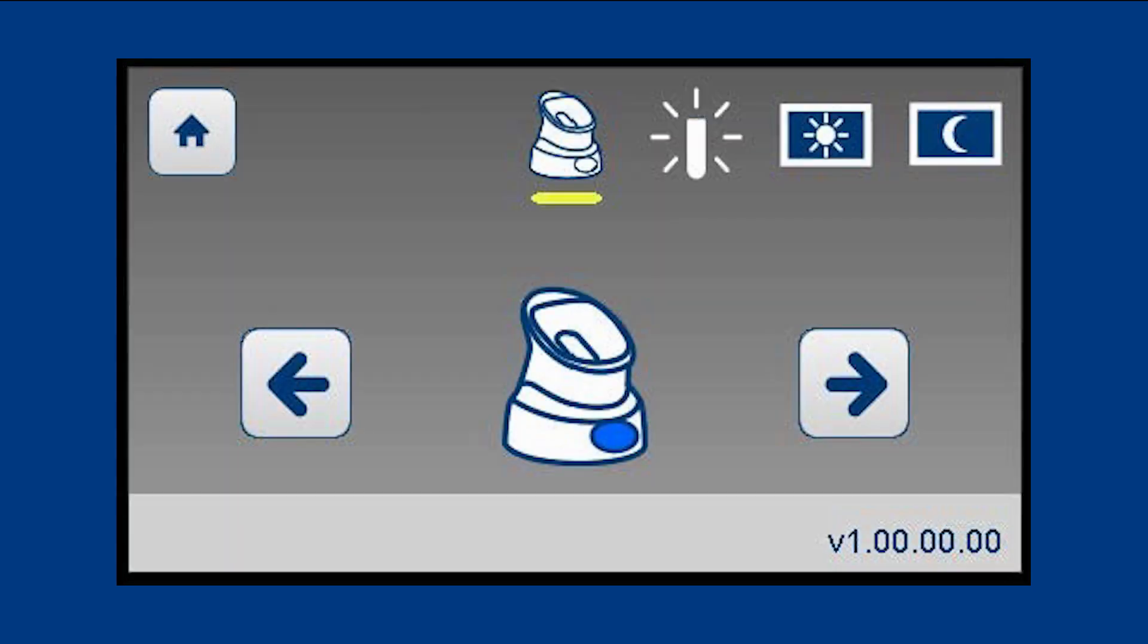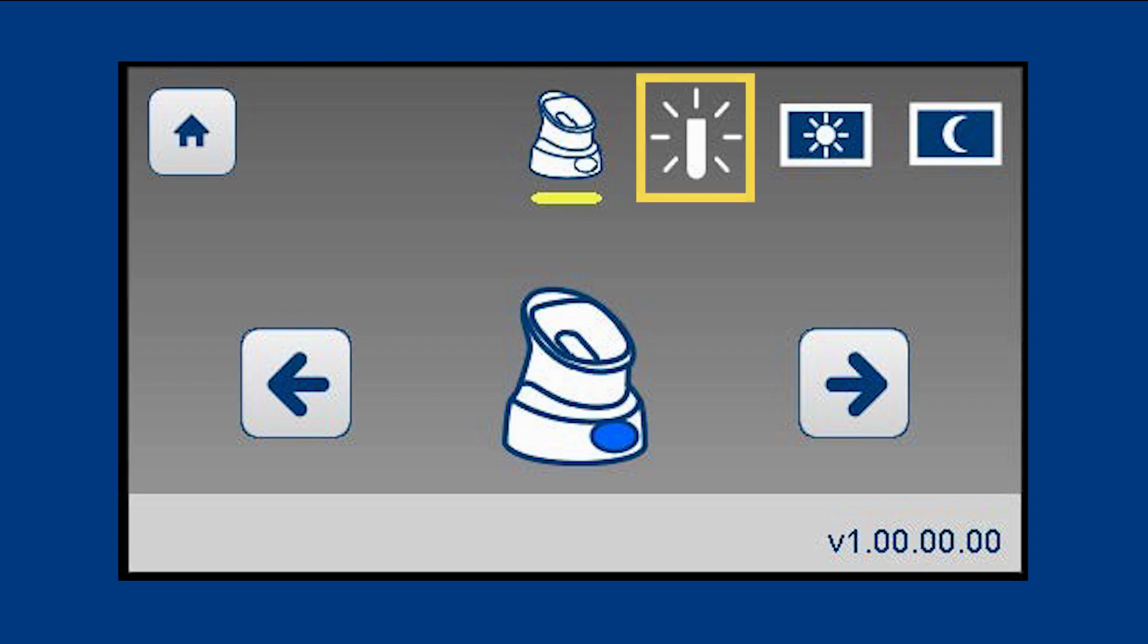The configuration screen allows the user to access and adjust setting options such as pod pairing color, tube light intensity, display brightness, and base sleep time.